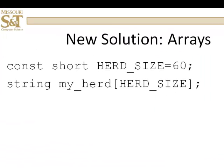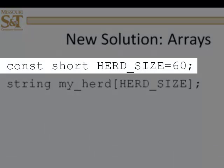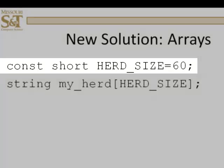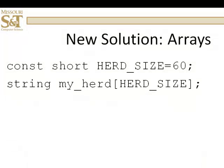Well, is there a better way? Yes, of course there is. What we're going to do is declare a const short of size 60, then I'll declare a whole array of strings. So, in one statement, I've declared 60 variables of type string, and I'm going to call that collection of variables myHerd.